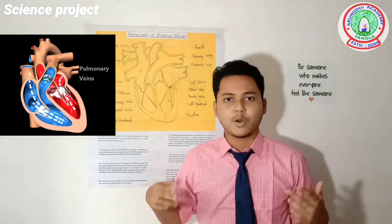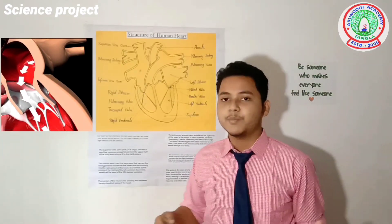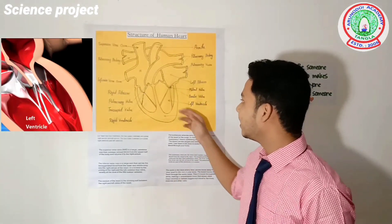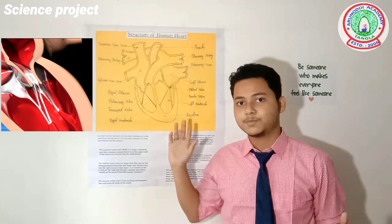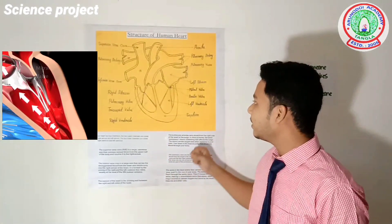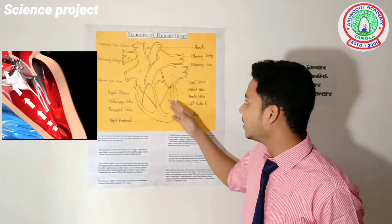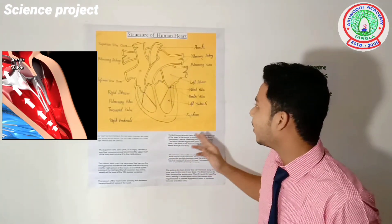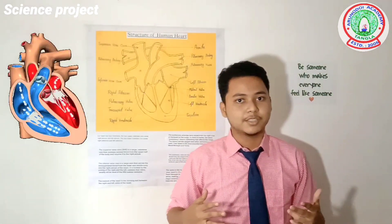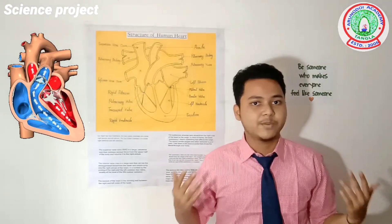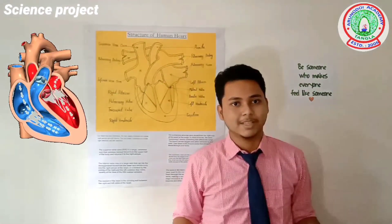The oxygenated blood then enters the left ventricle through the mitral valve. After that, through the contraction of the left side of the heart, the oxygenated blood flows through the aortic valve into the aorta. The aorta distributes the oxygenated blood to the entire body, and that is how the heart works continuously.